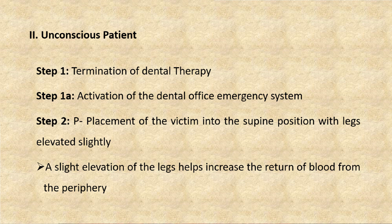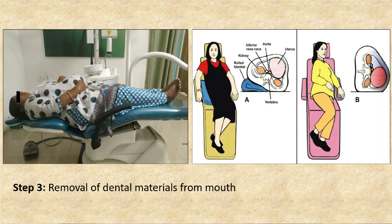For unconscious patients, the first step is termination of dental therapy, followed immediately by activation of the dental office emergency system. Step two is positioning: the patient should be placed in a supine or semi-supine position with legs slightly elevated. This increases venous return from the periphery, with the head, brain, and heart at the same level and legs slightly elevated.